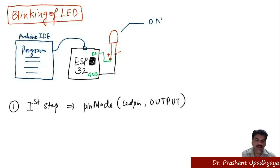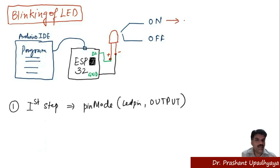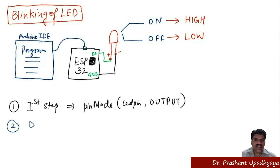We need to turn the LED either on or off. ON means we make the signal HIGH, and OFF means we make the signal LOW.